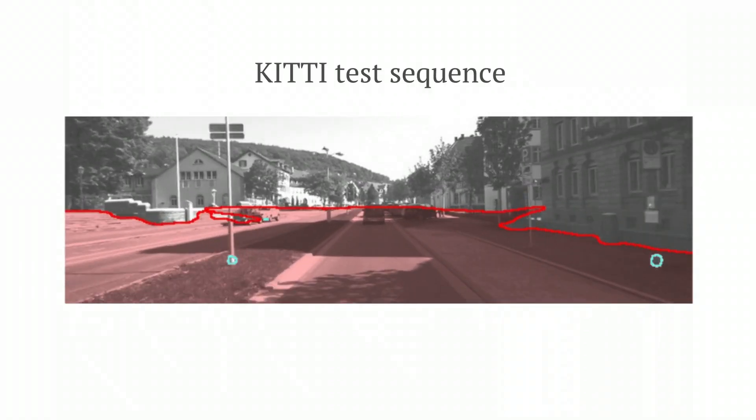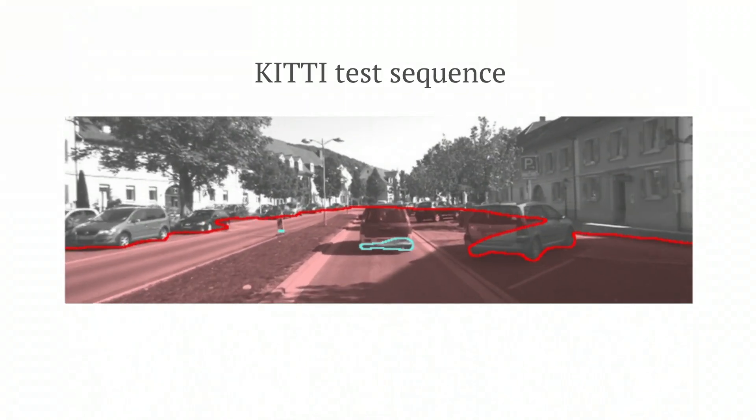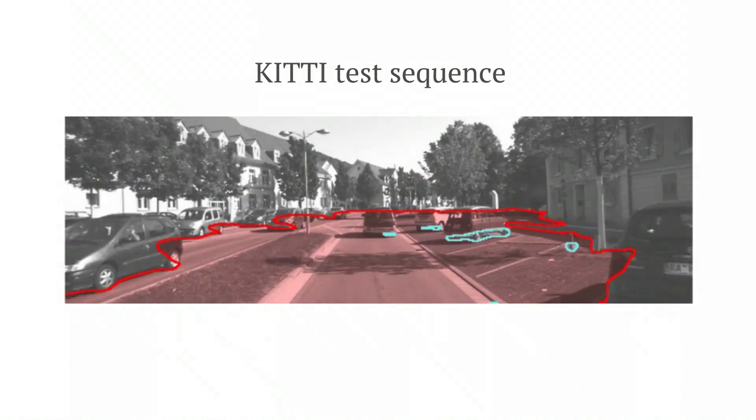Our estimates on KITTI are surprisingly good, considering this dataset was not designed for our task. Driving videos feature forward camera motion, while we favor training videos which view the same scene from multiple angles.